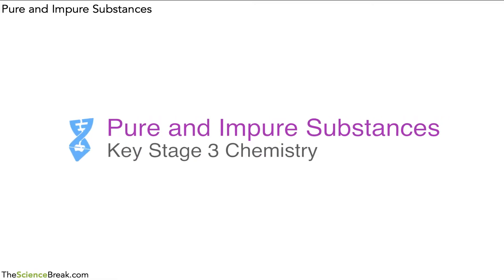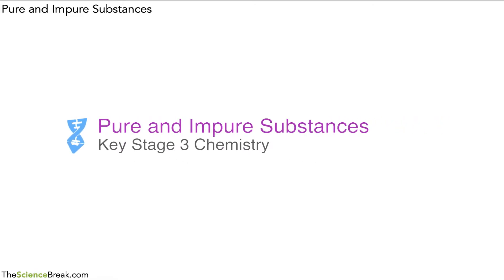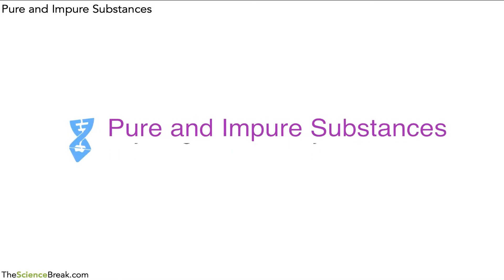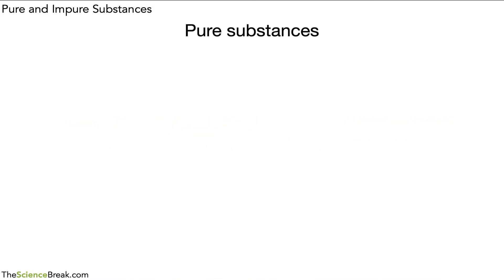Hello, this is a Key Stage 3 chemistry video for pure and impure substances. Firstly, what do we mean by pure substances? Well, these are made of one substance only, and what we mean by the word substance is made of one either element or compound only.